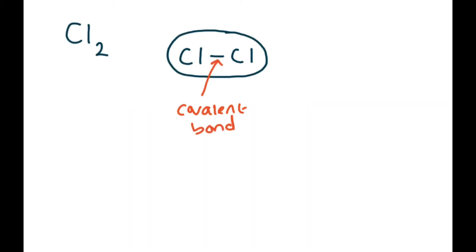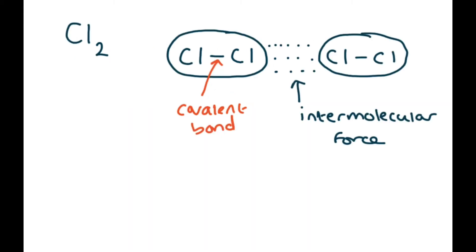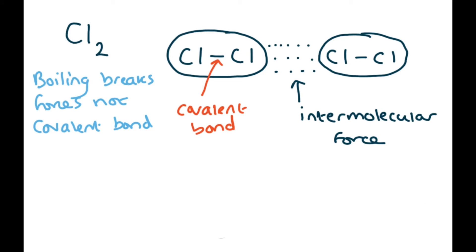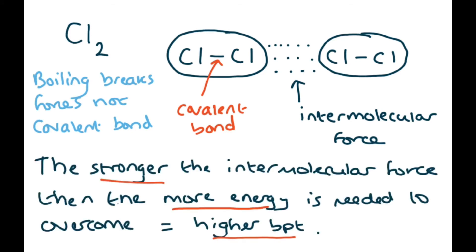For example, chlorine. You've got a covalent bond inside one molecule, but between molecules you have an intermolecular force. When you're boiling, you're breaking the forces, not the covalent bond.